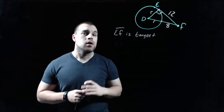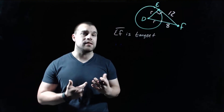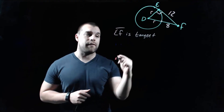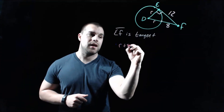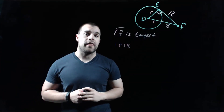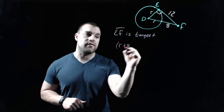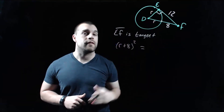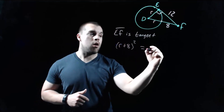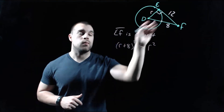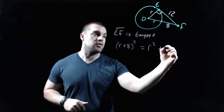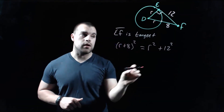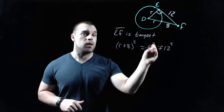From the edge of the circle to point F, that length is 8. So the total distance from D to F is R + 8. The other lengths of our triangle are R and 12. So our Pythagorean theorem equation looks like (R + 8)² = R² + 12².